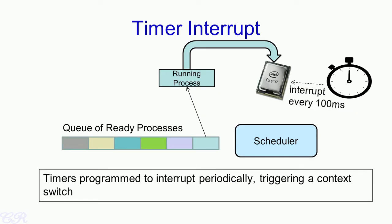A very common interrupt in this context is the timer interrupt. All systems have a timer that is configured to send interrupts periodically to the CPU, with periods ranging from 10 to 100 milliseconds. When the timer interrupt occurs, the OS triggers the CPU scheduler to execute. The scheduler looks at the queue of processes in the ready state and, based on some algorithm, chooses a process to move from ready into running, holding the CPU until the next interrupt.